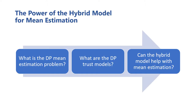The problem of mean estimation is one of the most fundamental problems in statistical literature. Not only is it useful in and of itself, but it's also often a key subcomponent in more complex statistical tasks. In this talk, we're going to start by defining precisely what the mean estimation problem is and what it means to solve it with differential privacy.